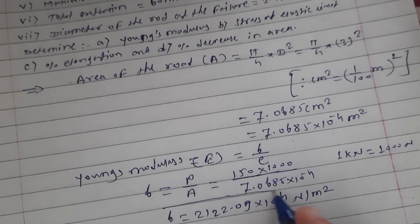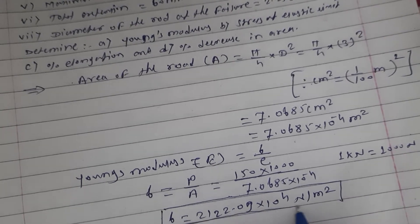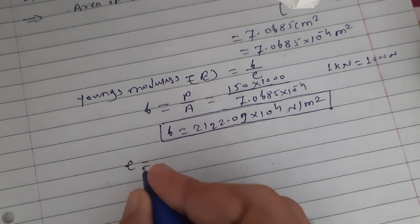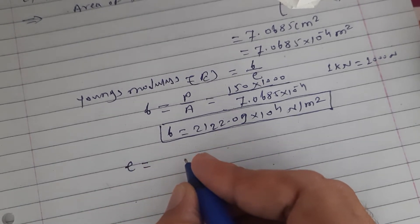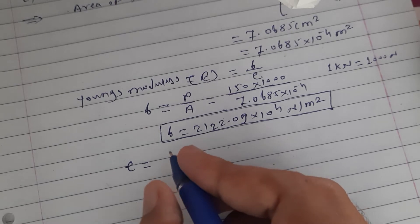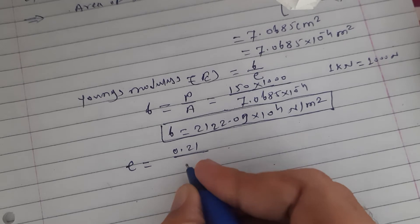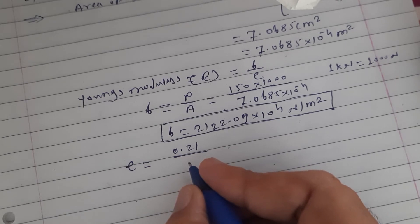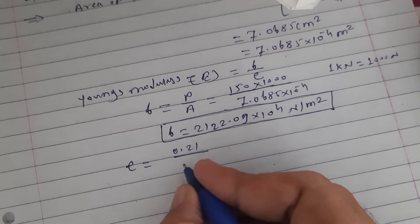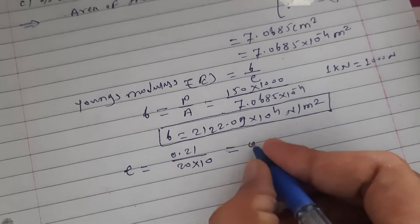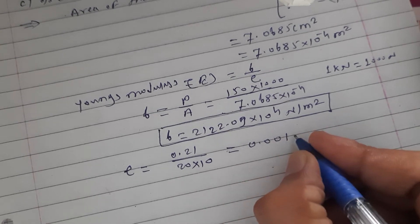This stress value is 2122.09 into 10 raised to 4 newton per meter square. Then to calculate strain: strain is denoted by small e, equal to increase in length (extension) divided by original length (gauge length). Extension is 0.21 mm and gauge length is 20 centimeter — converting to mm: 20 into 10. Then you get strain equal to 0.00105, which is unitless.